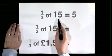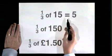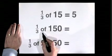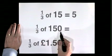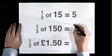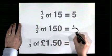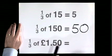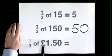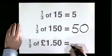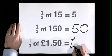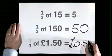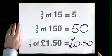One third of fifteen is five. One third of a hundred and fifty is fifty. One third of one pound fifty is no pounds fifty, or fifty p.